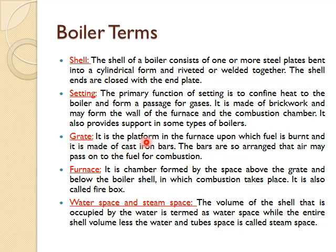Grate: it is the platform in the furnace upon which fuel is burnt, and it is made of cast iron bars. The bars are so arranged that air may pass onto the fuel for combustion. Furnace: it is a chamber formed by the space above the grate and below the boiler shell in which combustion takes place. It is also called a firebox.